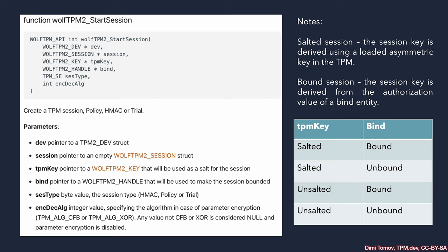What is important to know is that depending on how we provide entropy to the TSS to generate the session key, this defines the strength of our parameter encryption. Highest strength comes from a salted and bound session. A salted session is also a strong preference because it provides high guarantees from entropy sourced from an object already created inside the TPM, using the loaded primary asymmetric key, and allows mitigation against man-in-the-middle attacks.